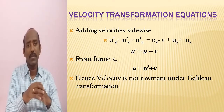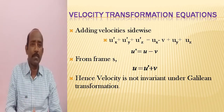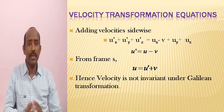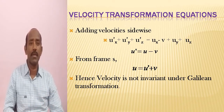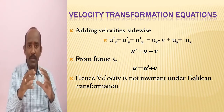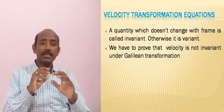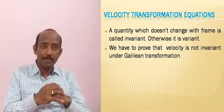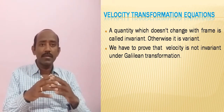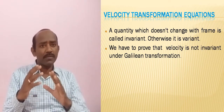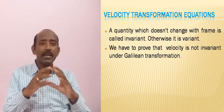If the observer is observing from frame S, then U = U' + V. These are the two equations for the velocity transformation. The velocity is not invariant under the Galilean transformation. A physical quantity which changes with respect to frame — if we observe from different frames, the velocity appears different. That is why it is a variant quantity; the velocity is not invariant under Galilean transformation.